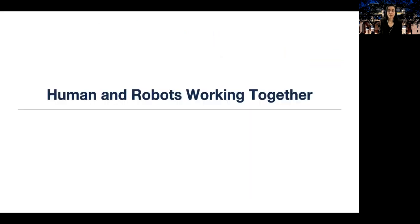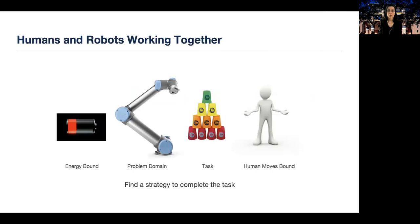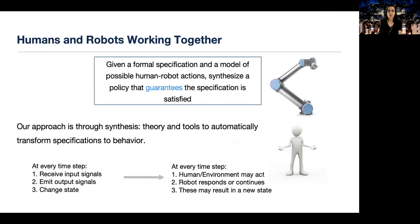Let me finish with an example of OMPL used to support humans and robots working together. Here is a problem that involves task and motion planning, but also a human who works with a robot. We need to stack the cups. We have a robot, we have an energy bound, and we have a human who may decide to help or not with a limited number of actions. So the problem is, given a formal specification and a model of possible human robot actions, synthesize a policy that guarantees that the specification is satisfied. We are looking for a policy and not a plan, and we also want guarantees that the specification will be satisfied.